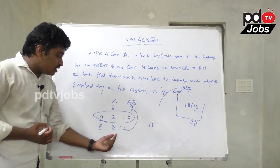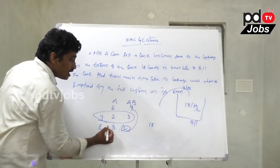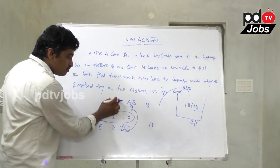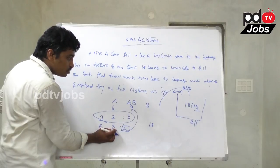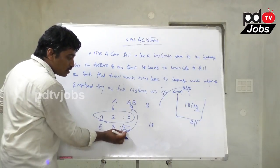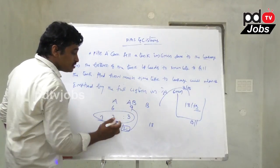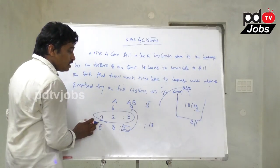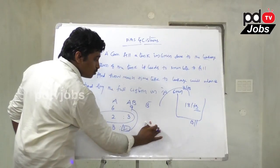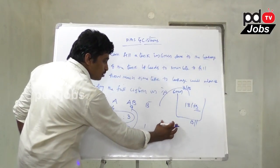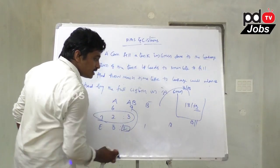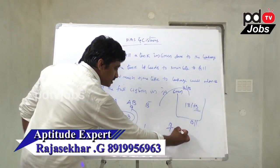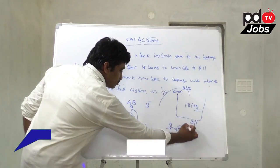With leakage, the net efficiency is two liters per minute (one liter less than A's three liters). So the leakage rate is one liter per minute. To empty 18 liters at one liter per minute, the leakage alone will empty the full tank in 18 minutes.